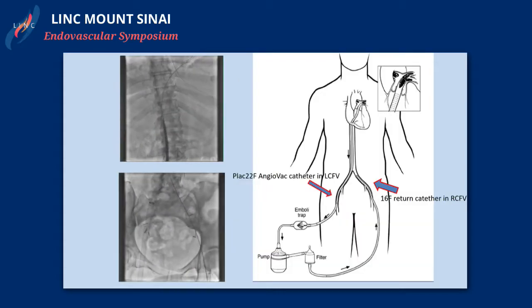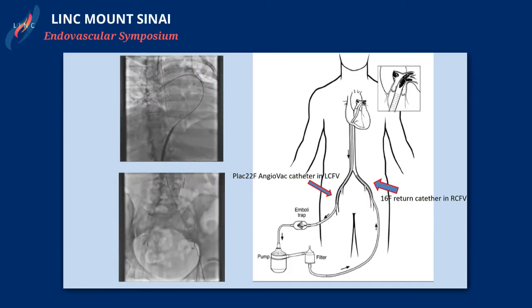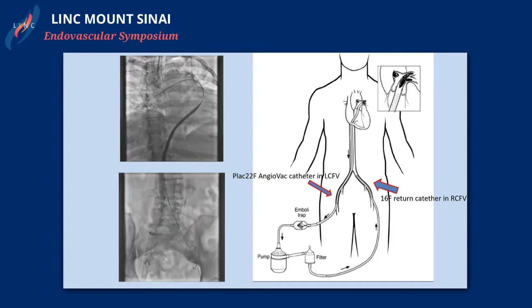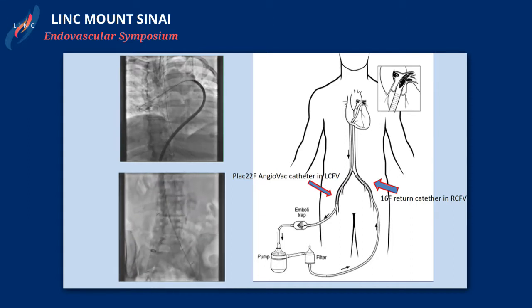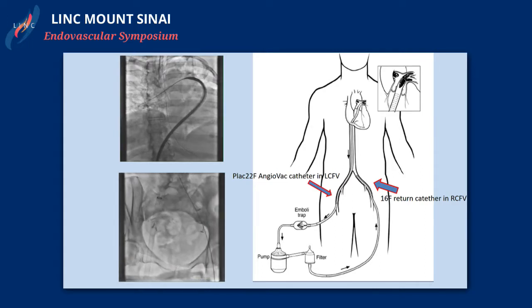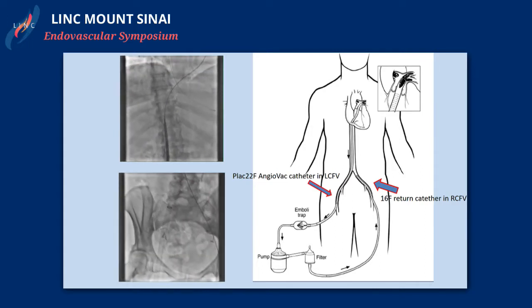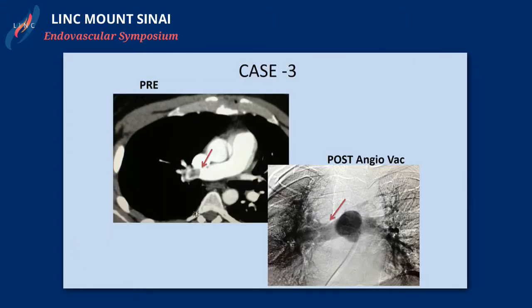We decided to go in and mechanically extract the thrombus. As shown in a previous talk, this is our AngioVac device. It goes around the thrombus and we were able to get suction of the clot burden and retrieve it with very little heparin used. Afterwards, an angiogram showed that most of the clot burden had resolved, though we weren't able to do a CT scan afterwards.